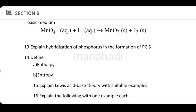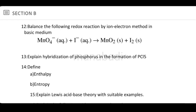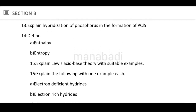Define enthalpy and entropy. Enthalpy and entropy definitions are straightforward. Enthalpy is equal to internal energy plus the product of pressure and volume. Entropy is a measure of the randomness of a substance — the greater the randomness, the higher the entropy. These are simple definitions.